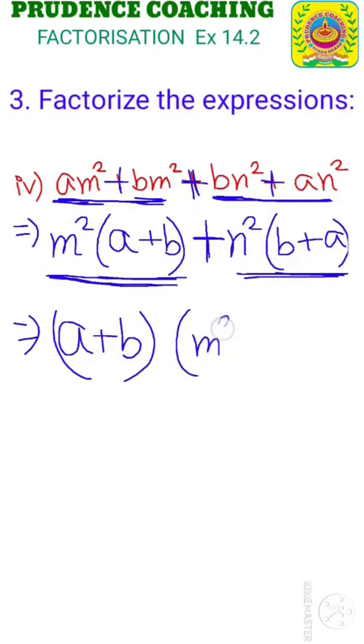So in the first term you will be left with m². Plus is the separator here. And in the next term you are left with n². So this is our final answer.